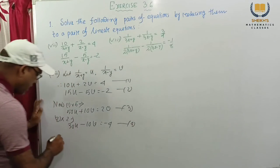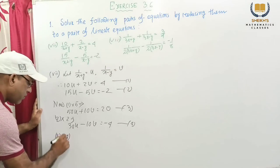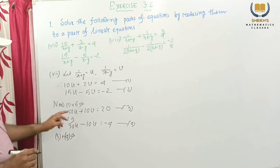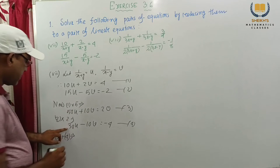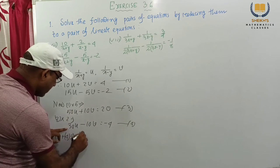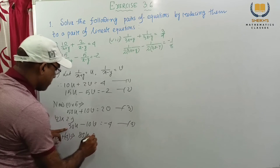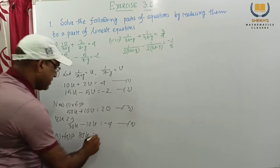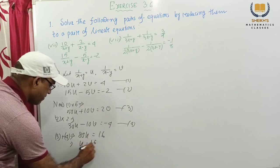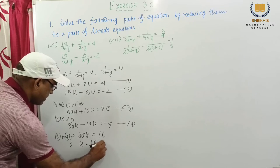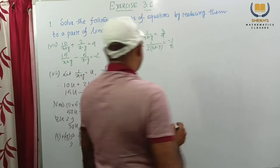3 plus 4 implies: if we add, 10v and minus 10v cancel. And 50u plus 30u is 80u. And 20 plus minus 4 is 16. Therefore u equal to 16 by 80, this equal to 1 by 5. U equal to 1 by 5.